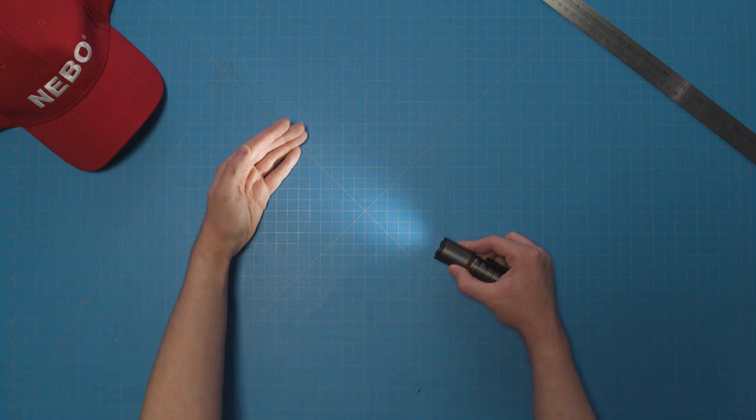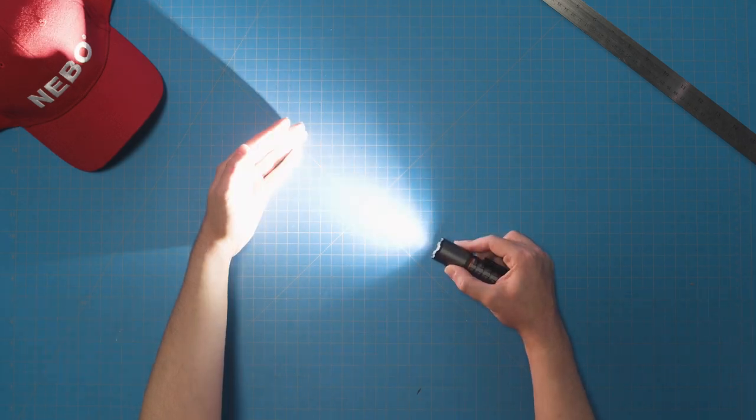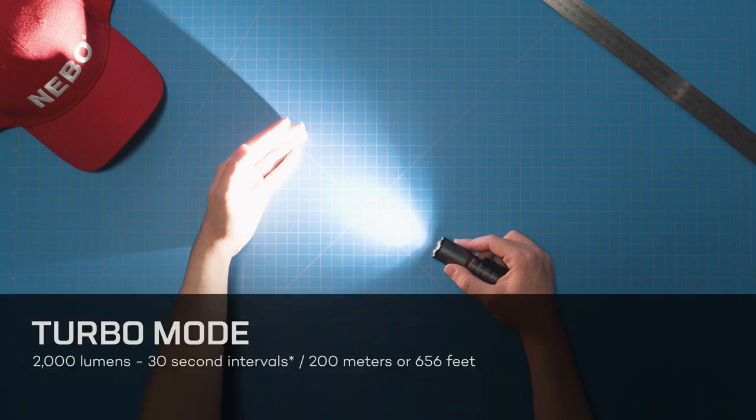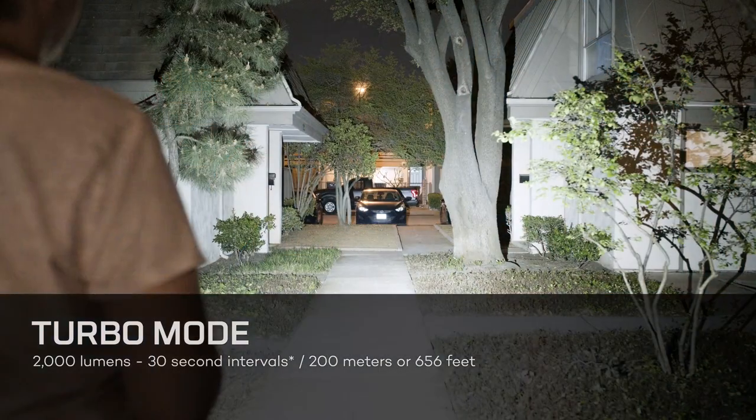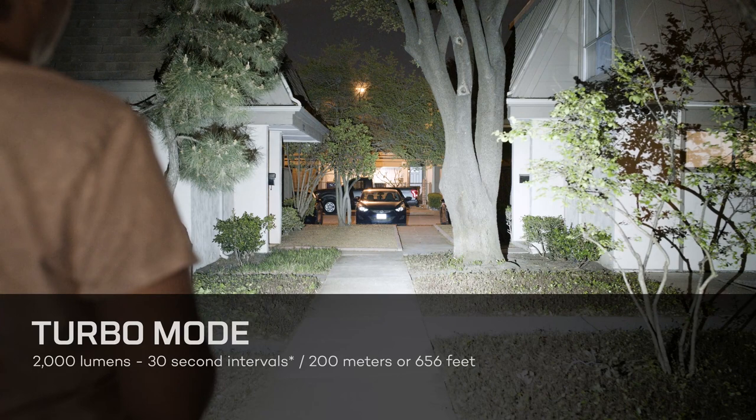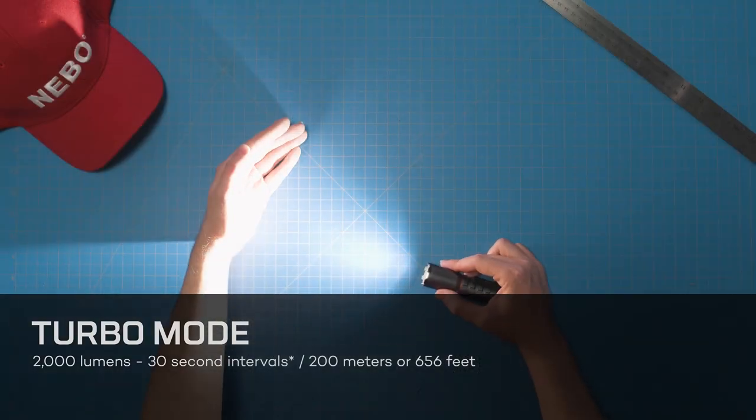If you press and hold the power button on the Torchy 2K at any time, it will activate turbo mode, which is up to 2,000 lumens, shining at a distance of up to 200 meters or 656 feet.